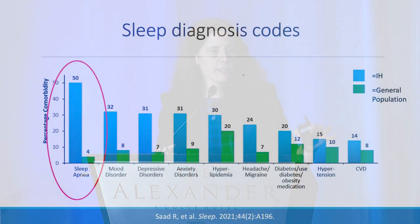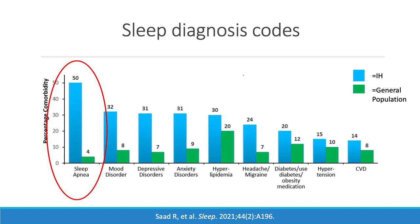The other approach is the polar opposite: using billing data on millions of people in the US, of whom about 5,000 had IH, looking at what other things were diagnosed in the 12 months before IH was diagnosed. This is less precise but covers many more people. Notably, a lot of the same story comes up in both approaches — mood and depressive and anxiety disorders appear across both. This larger study also shows headache and a very large sleep apnea bar not seen in the smaller study.